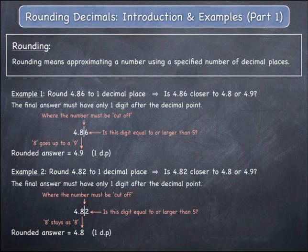Giving the final rounded answer of 4.8 expressed to one decimal place. This means that 4.82 is more closely approximated by 4.8 than it is by 4.9.